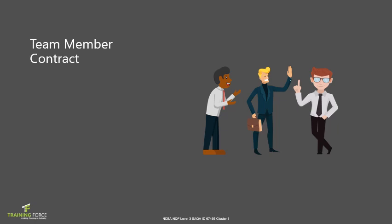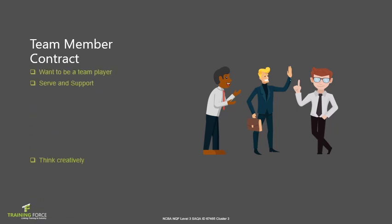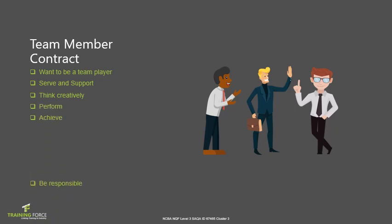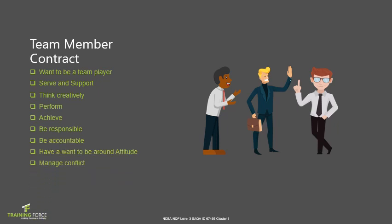Team members must commit to the following behaviours to show functional participation: wanting to be a team player, serving and supporting, thinking creatively, performing, achieving, being responsible and accountable, having a positive attitude, and managing conflict. To build team cohesion, team contracts assist in building cohesion, create a sense of belonging and commitment, which in turn motivates and supports each team member.